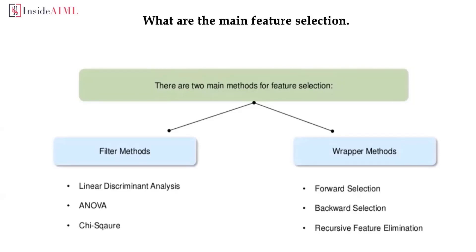In content-based filtering, the system depends on how you rate the movies you have seen. If you have rated superhero movies highly, you are more likely to be suggested another superhero movie. In collaborative filtering, the system finds similar users. If two users liked five movies and one of them liked a sixth, the second user gets that sixth movie recommended — because users in the same group are assumed to share preferences.